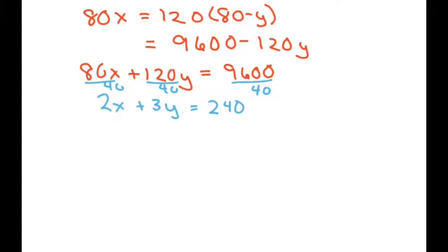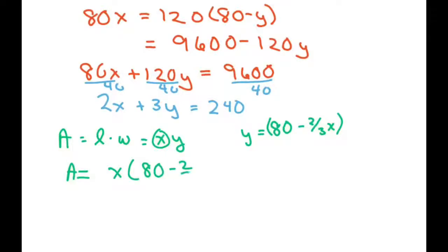Now we're going to find the area. We know the area equals length times width, so the area is going to be X times Y. If I solve for Y, I'm going to get Y equals 80 minus two-thirds X. So our area is X times 80 minus two-thirds X, which simplifies to 80X minus two-thirds X squared.